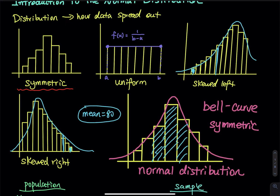Before we move on, take a look at uniform distribution again. There is a purple horizontal line that can be described as a probability distribution function: f(x) = 1 / (b − a). The normal distribution has a bell curve, and this bell curve can be described as a function that is far more complicated compared to the uniform distribution.